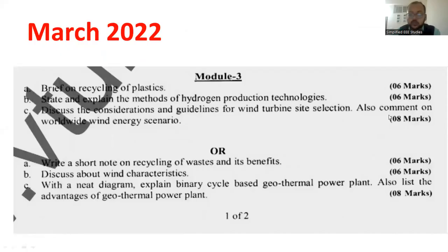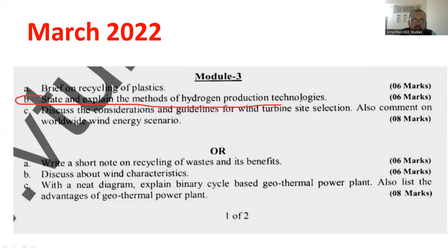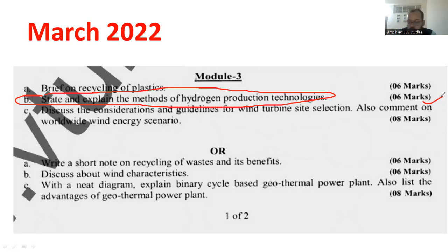You can see March 2022. The question number 1b asks: explain the methods of hydrogen production technology. That is very, very important. It carries the weightage of 6 marks. You are advisable to mention at least 4 to 5 methods. That is the question which belongs to hydrogen energy from this particular question paper.